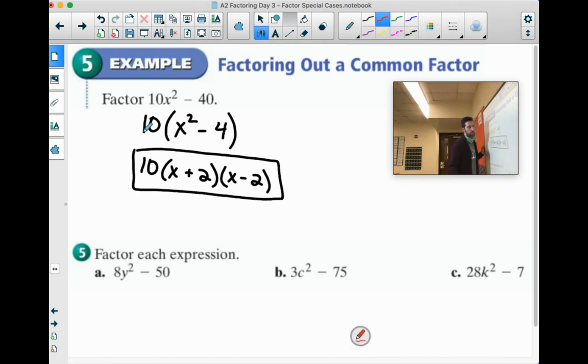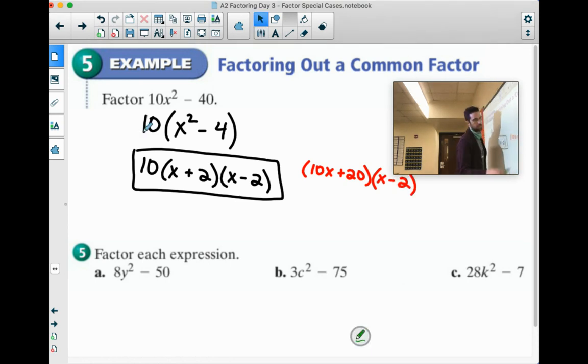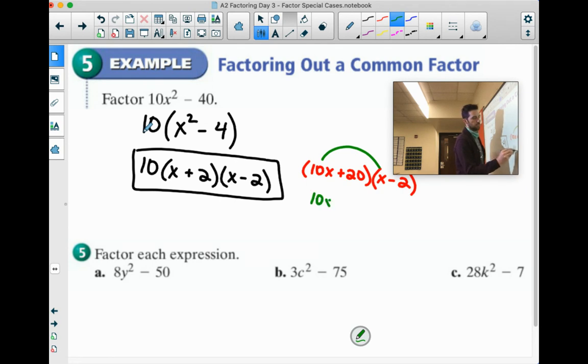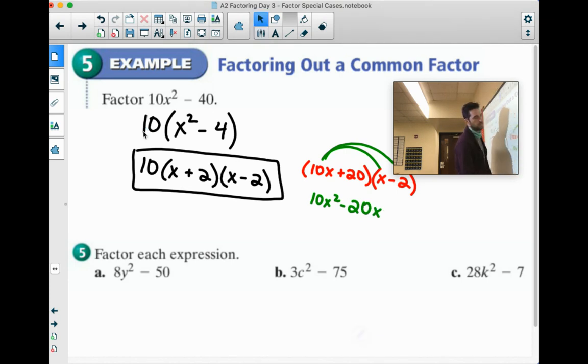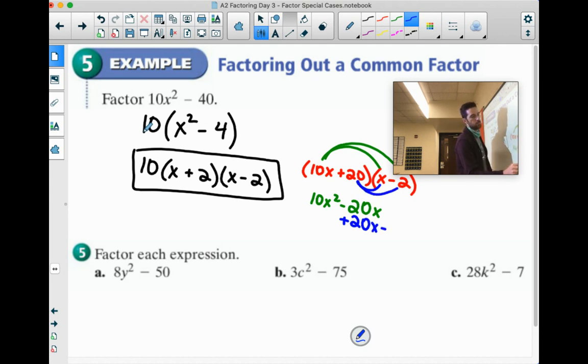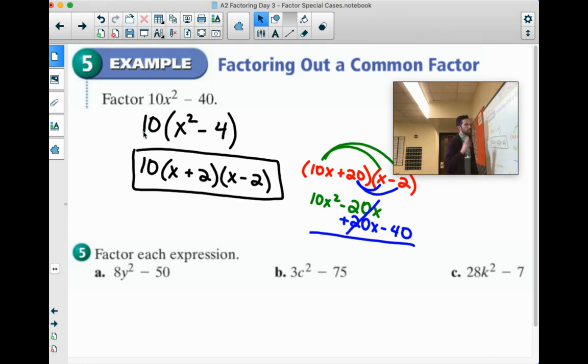There's a couple ways you can check that if you want. You could do the stuff in parentheses first and then multiply by 10 at the end. Or you could even distribute the 10 to one of the sets of parentheses. If you did that, 10 times x is 10x. 10 times 2 is 20. And then you could foil that with x minus 2. Let's see. 10x times x is 10x squared. 10x times negative 2 is negative 20x. And we got our inside positive 20x. And last 20 times negative 2 is negative 40. Middle terms cancel. 10x squared minus 40. Fantastic.